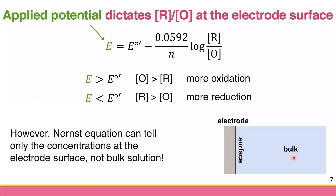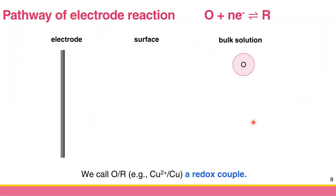Why can't we predict concentration accurately? In order to have the redox reaction at the electrode, your species have to undergo many processes. Let's talk about something called the pathway of the electrode reaction.